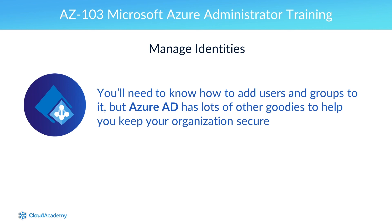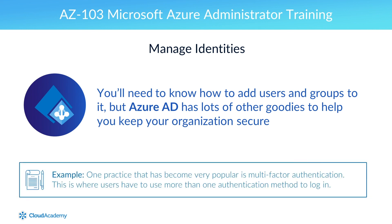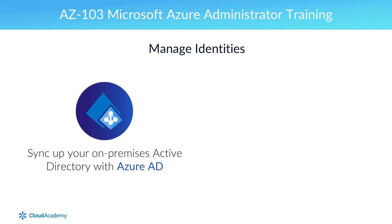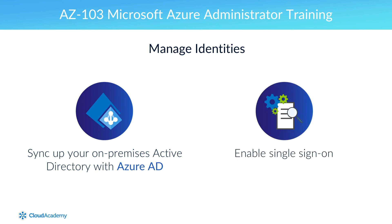For example, one practice that has become very popular is multi-factor authentication. This is where users have to use more than one authentication method to log in, such as having to enter both a password and a verification code that was texted to their phone. You'll also learn how to sync up your on-premises Active Directory with Azure AD and enable single sign-on.